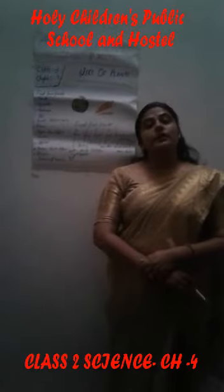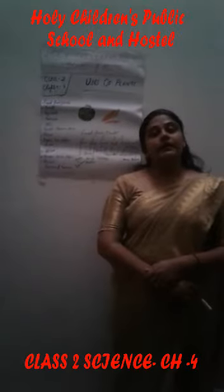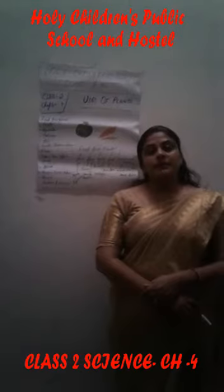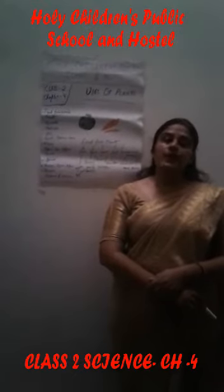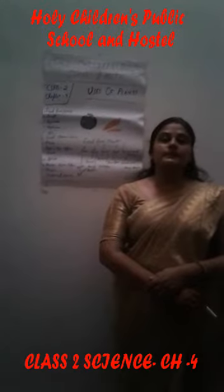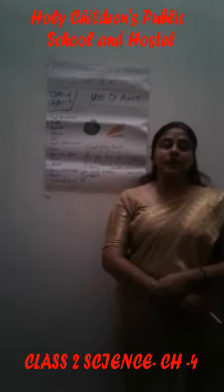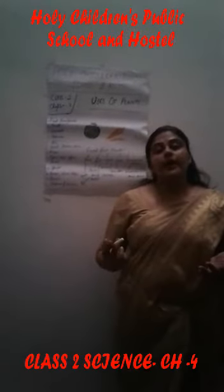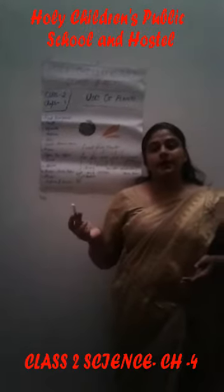We eat roots of plants, such as turnip, radish, carrot etc. We eat leaves of plants, such as spinach, cabbage etc. We eat seeds of plants, such as corn, gram etc.